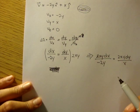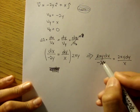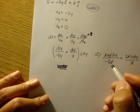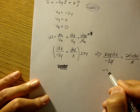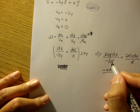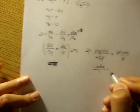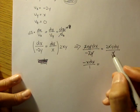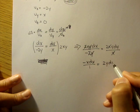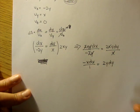All right, we'll get 2xy times dx over negative 2y is equal to 2xy dy over x. Here the 2 cancels out with this, the y's cancel out, and on this side the x's cancel out. So we're left with negative x dx over 1.